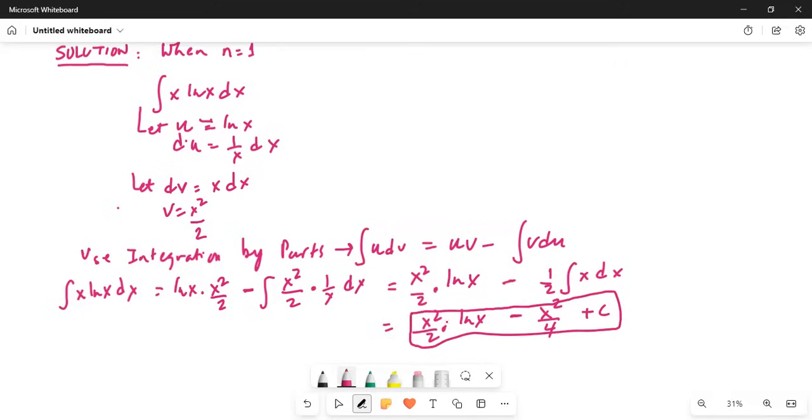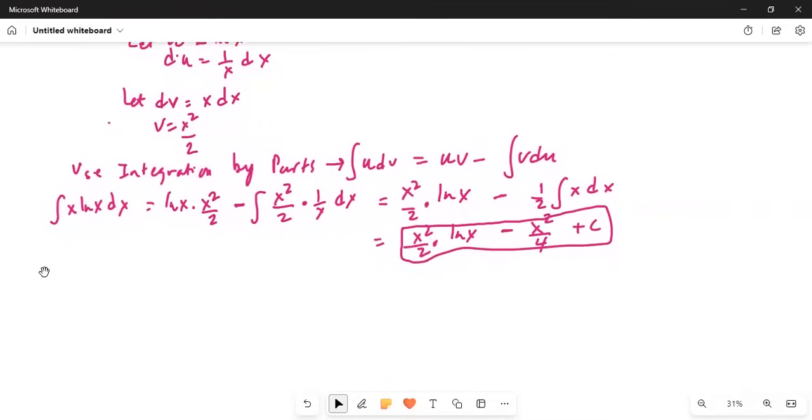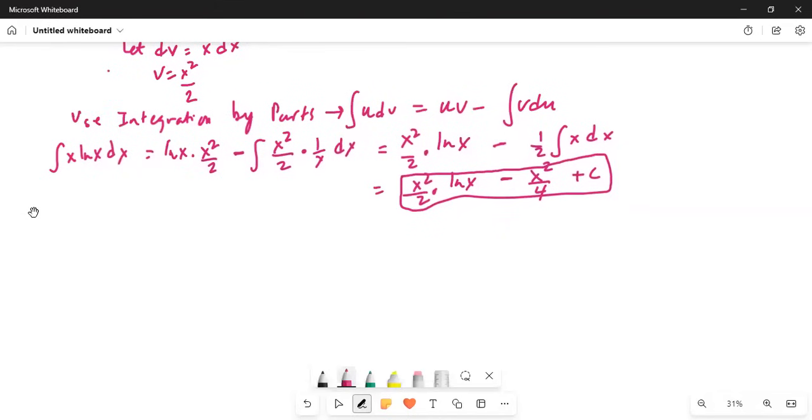Let's now do for n equal to 2. When n is equal to 2, again, same u is equal to ln x. So, du is equal to 1 over x dx.